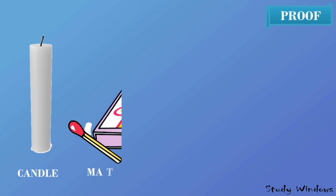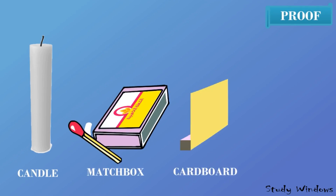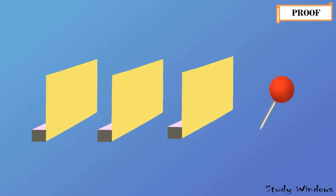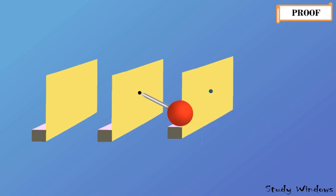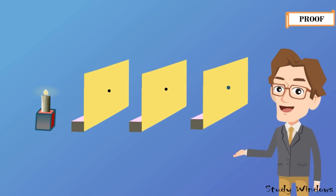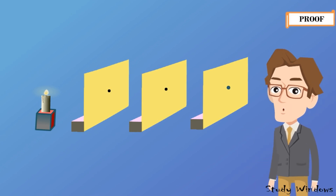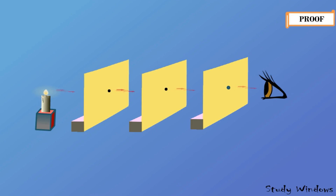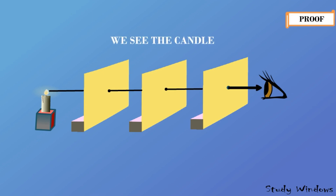Now we will prove this further. We'll take a candle, a matchbox with matchstick, three cardboards, and one pin. We keep all three cardboards at equal distances in the same line, and using the pin we make holes on all three cardboards in the same position. We place the burning candle on the opposite side and try to see it through the holes. Surprisingly, we can see the candle, because light comes through the holes of all three cardboards and reaches our eyes.